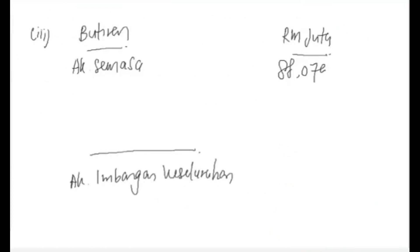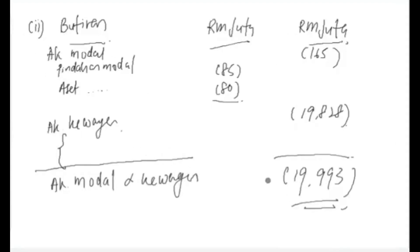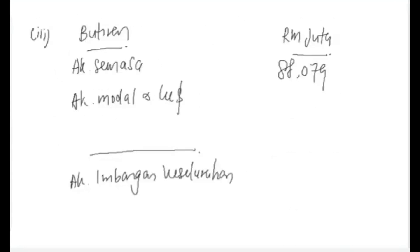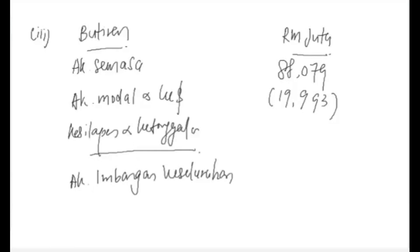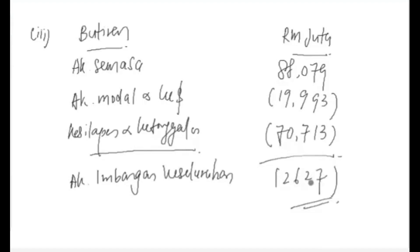Selain daripada akaun semasa, kita ada akaun modal dan kewangan — tadi sudah tunjuk pengirannya, jadi terus pindahkan maklumat dia. Dan lagi satu item yang terakhir — kesilapan dan ketinggalan, masukkan dengan tanda negatifnya. Cuba kirakan akaun imbangan keseluruhan — anda dapat negatif 2,627. Itulah jawapan kita bagi akaun imbangan keseluruhan.